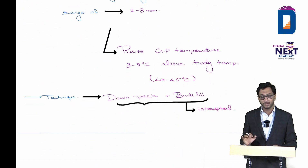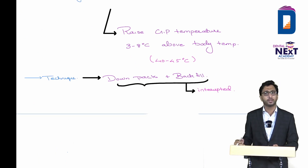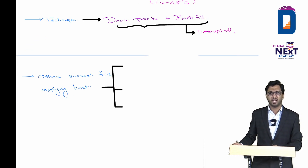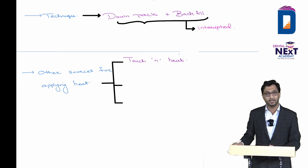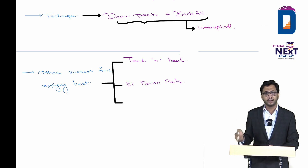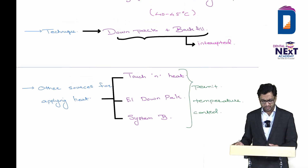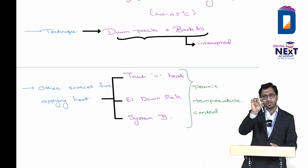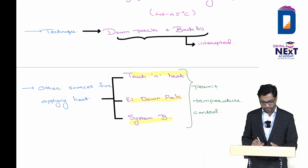Warm vertical condensation is interrupted. Other heat sources for warm vertical include Touch and Heat, EI Down Pack, and System B — these allow temperature control, unlike heating in a flame. In exam questions: Touch and Heat, EI Down Pack, and System B are used in warm vertical condensation. The compacting force in warm vertical is applied vertically, same direction as lateral condensation but with different methodology.